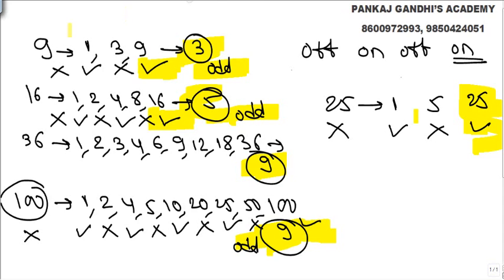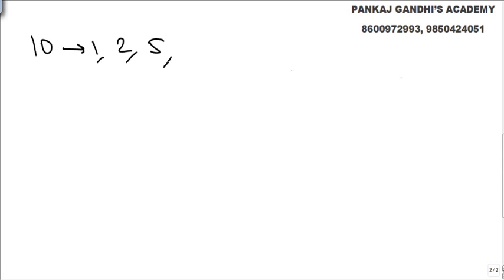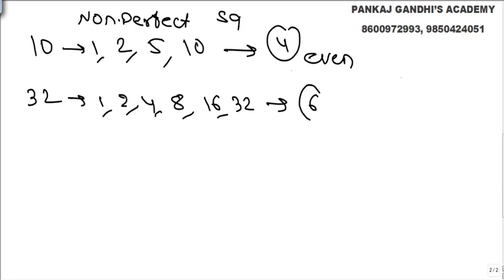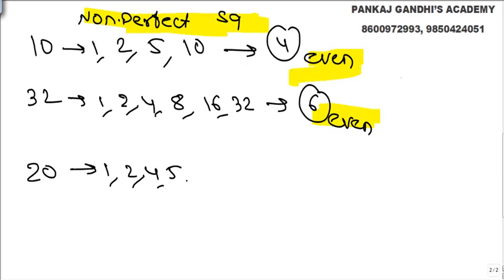But if we take all perfect square numbers up to 100, 10 bulbs will be on at the end. For a non-perfect square number like 10: factors are 1, 2, 5, and 10 — 4 factors, even. Another example, 32: factors are 1, 2, 4, 8, 16, 32 — 6 factors, even. Another example, 20: divisible by 1, 2, 4, 5, 10, and 20 — even. All non-perfect square numbers have an even number of factors.